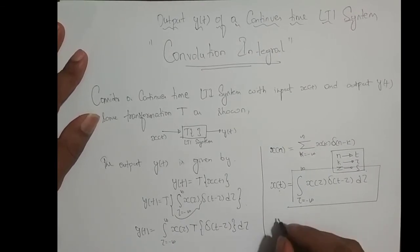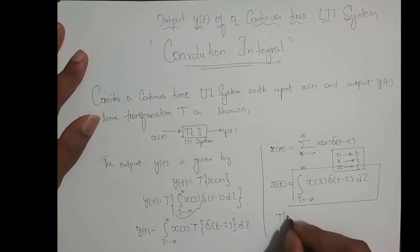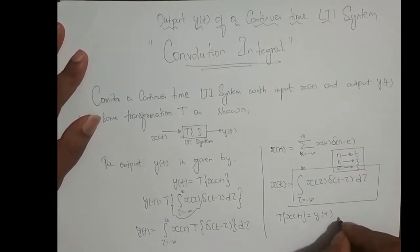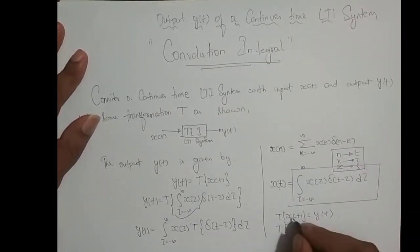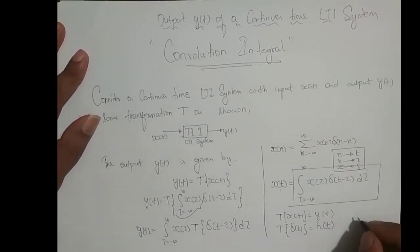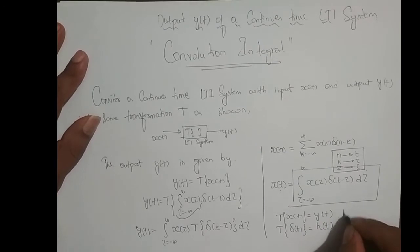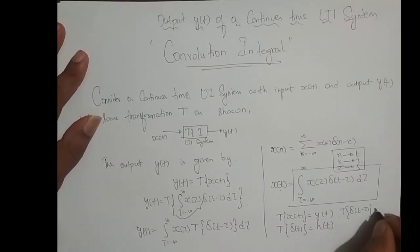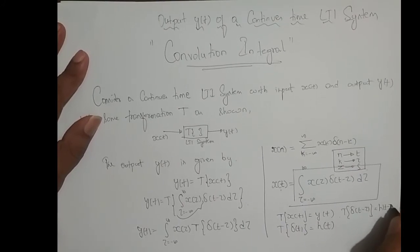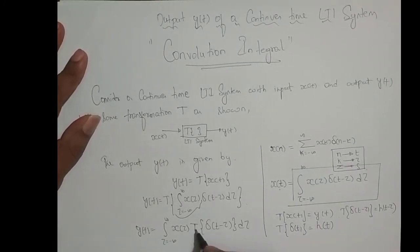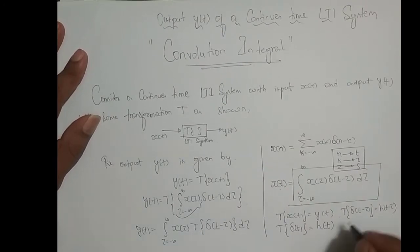As we know, the transformation of x(t) gives y(t). Now, instead of x(t), if we feed delta(t), the output is nothing but the impulse response, which is h(t). Now, instead of feeding delta(t), if we feed delta(t minus tau), the output is h(t minus tau). So instead of writing the transformation of delta(t minus tau), we write h(t minus tau).